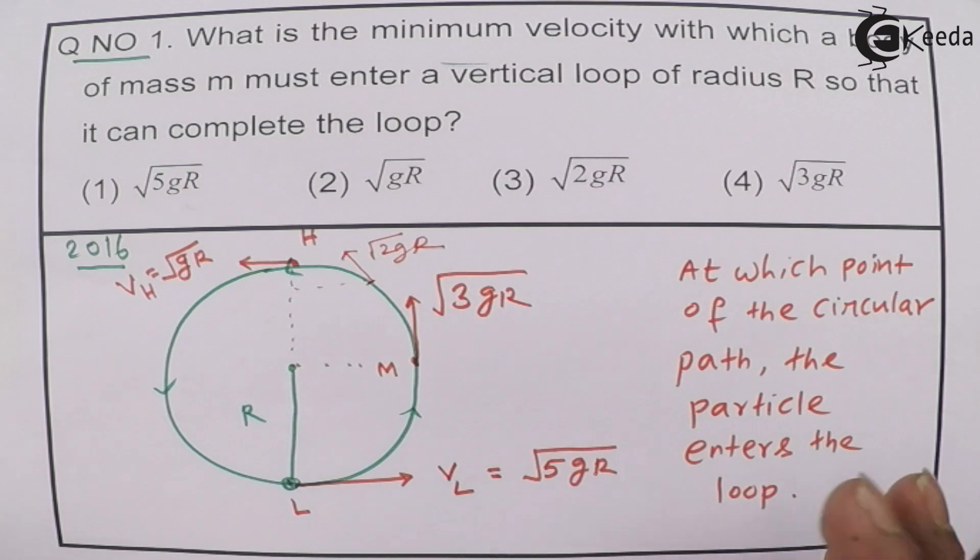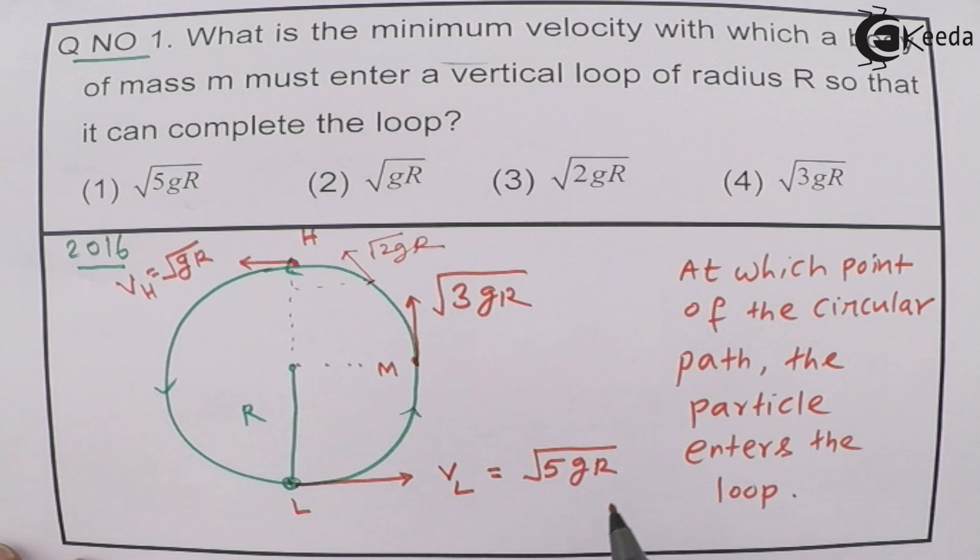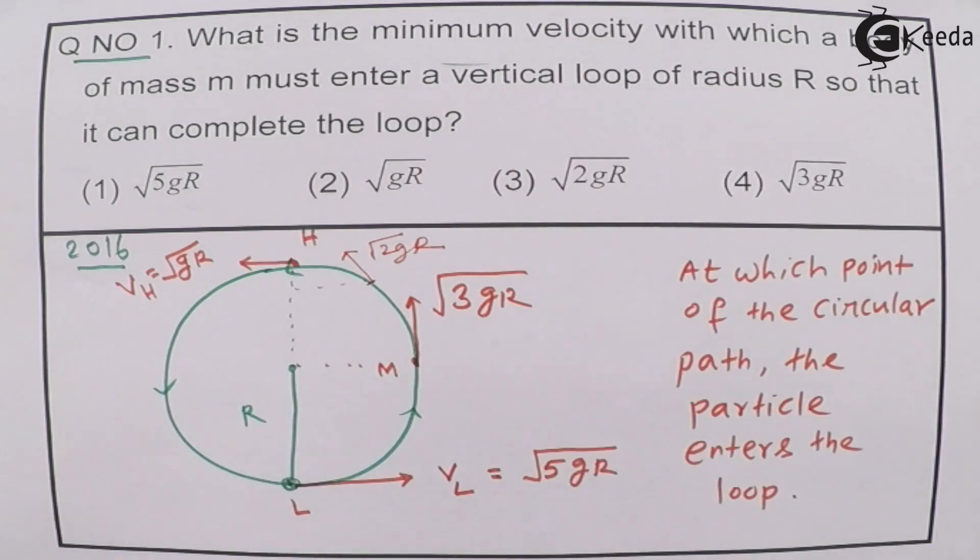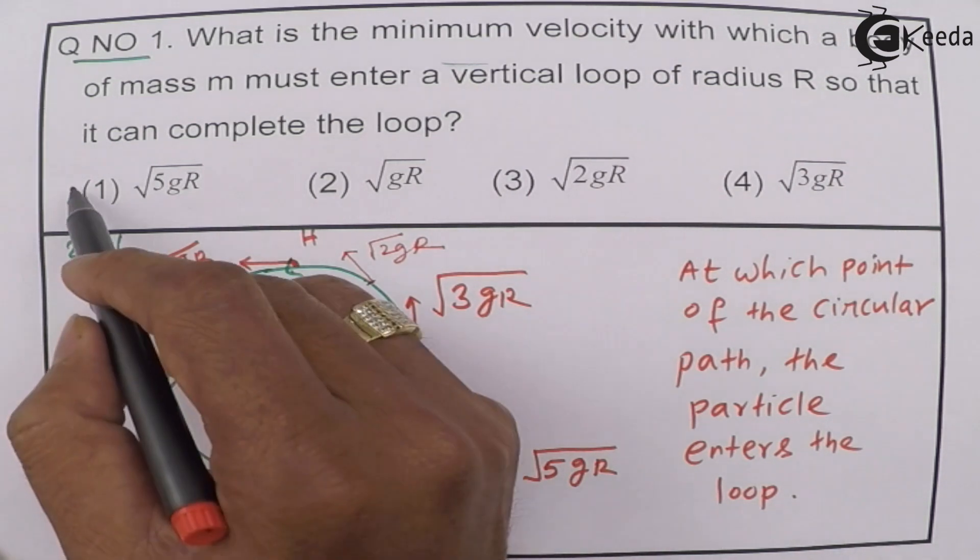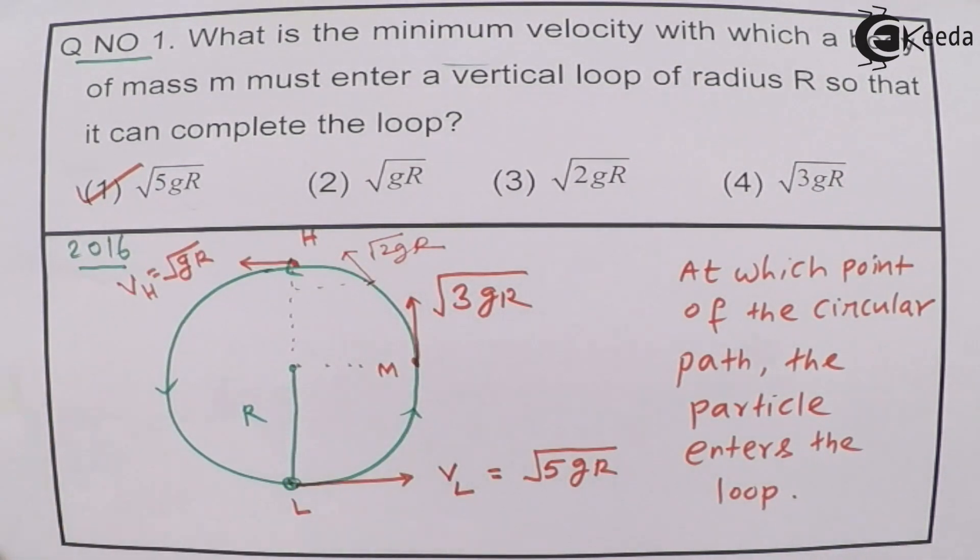But, in general, when nothing is mentioned, then the first priority is to let the object enter at the lowest point. Generally, if the string is at rest, and we give a velocity, obviously, we provide the velocity at the lowest point. But, this question is incomplete. But, we will assume that it has to be at the lowest point, give a velocity, and it will complete the loop. So, in the lowest point case, then this is the right answer.